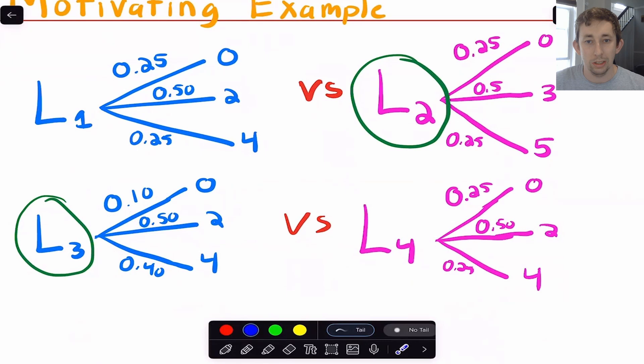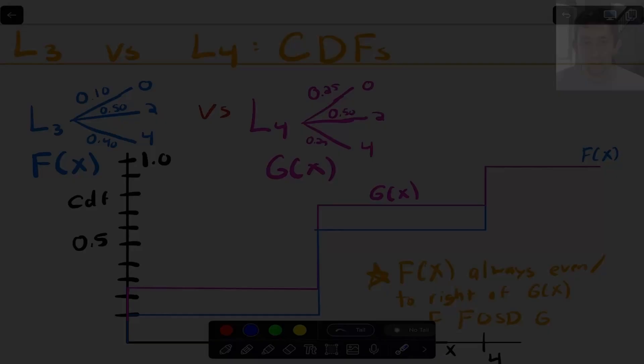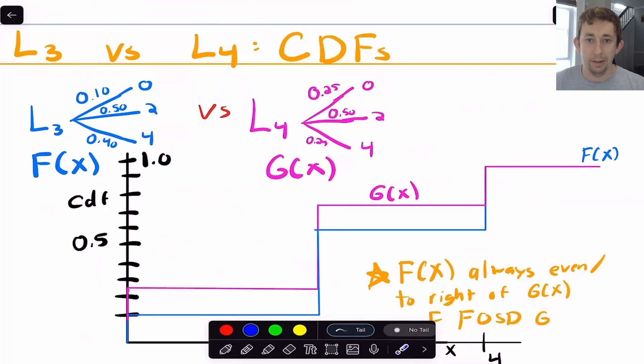So that's going to be useful to sort of think about as we talk about first-order stochastic dominance. Now when we talk about FOSD, we're talking about the CDFs or the cumulative distribution function of each of these lotteries. Even though they're discrete, the lotteries are discrete, they have discrete outcomes, we can still make a CDF.